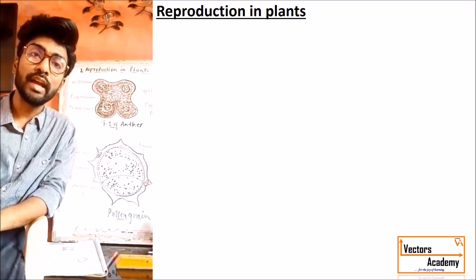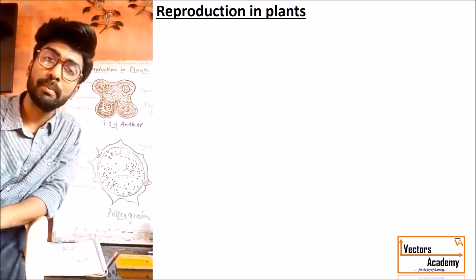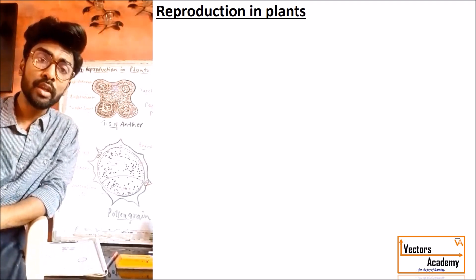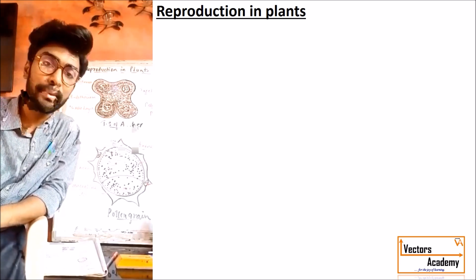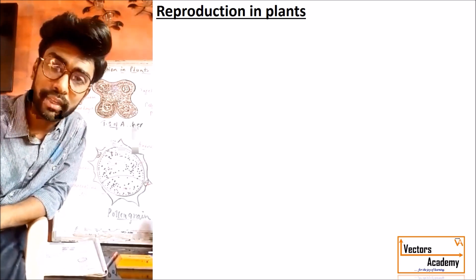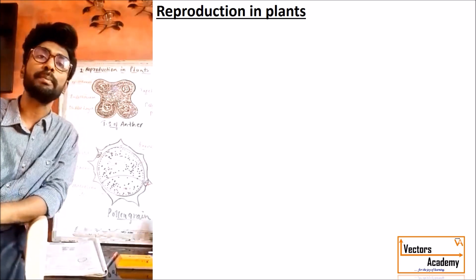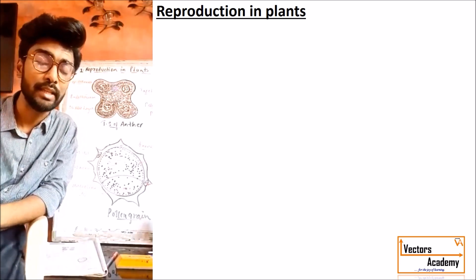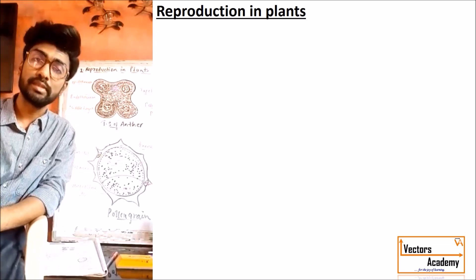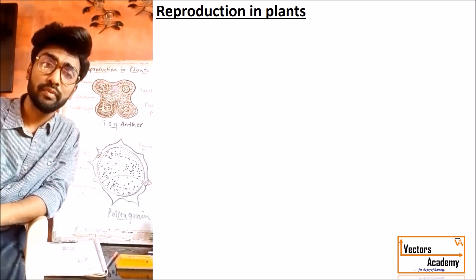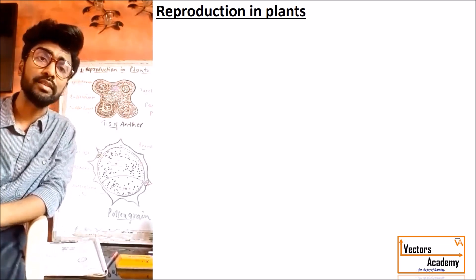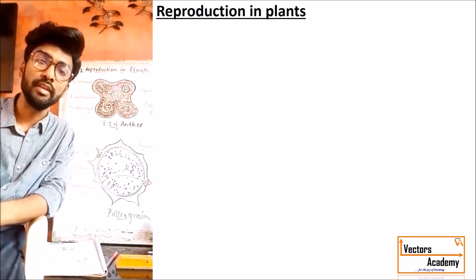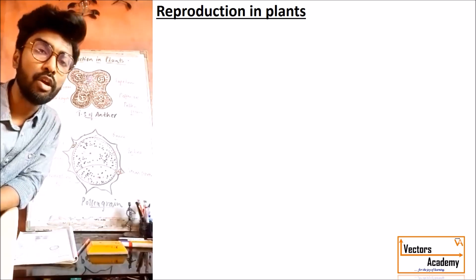You know that you have Biopaper 1 and Biopaper 2. Biopaper 1 will be dealing with botanical science and Biopaper 2 will be dealing with zoological sciences. We will start today with the very first chapter, that is reproduction in plants — sexual reproduction in plants.